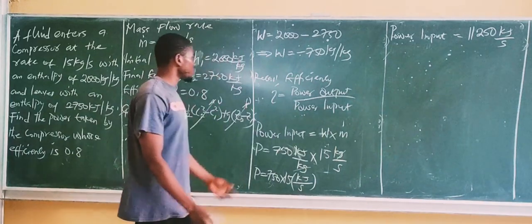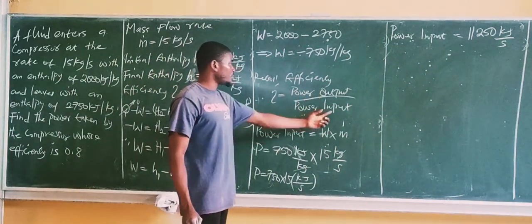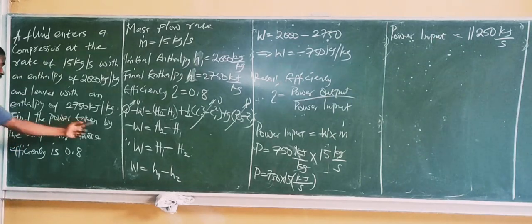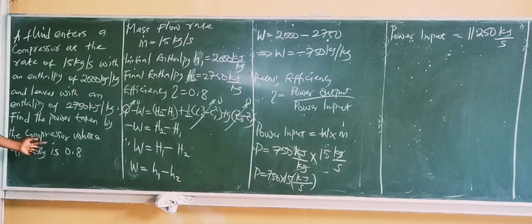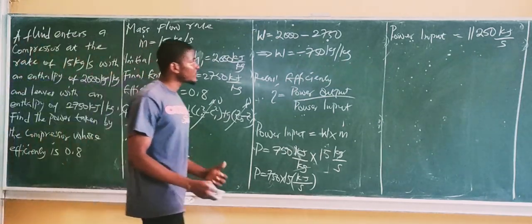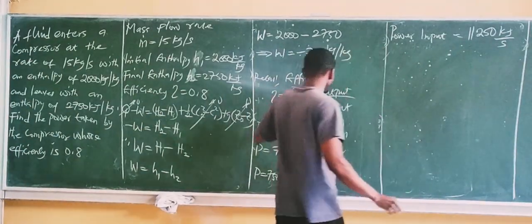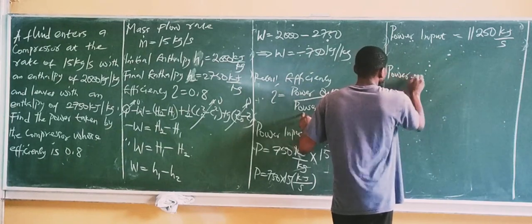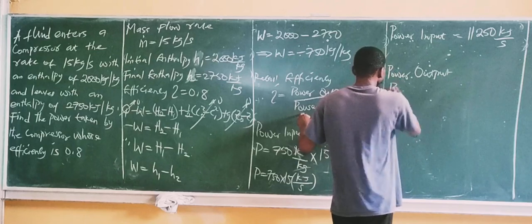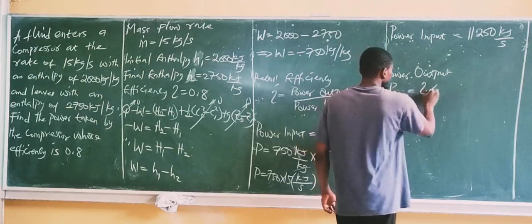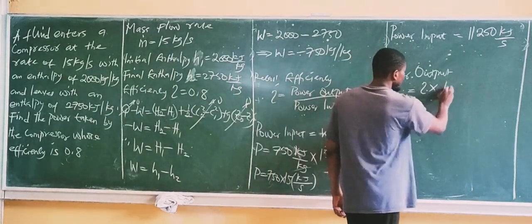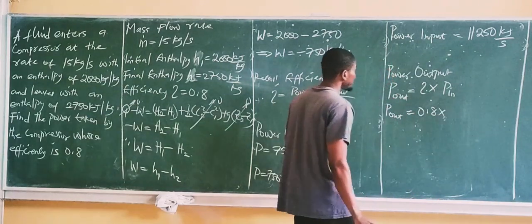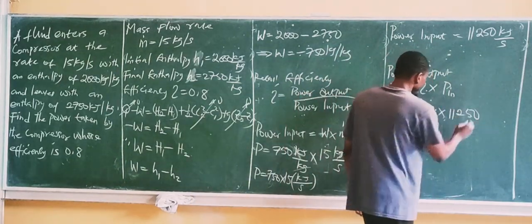Now, efficiency equals power output over power input. We can obtain the power taken by the compressor from this equation. Rearranging, power output equals efficiency times power input. Power output equals 0.8 times 11,250, giving us the final answer for the power taken by the compressor.